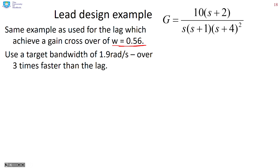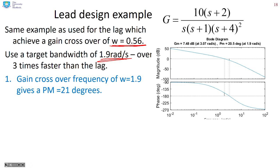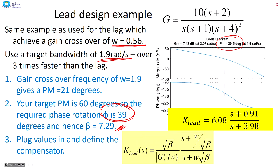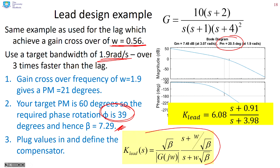Let's look at the same example used with the lag. With the lag, the crossover frequency was 0.56 — with a lead we can go faster, so we aim for 1.9 radians per second. At a gain crossover frequency of 1.9, scaling G gives a phase margin of only 21 degrees. To achieve a phase margin of 60 degrees, we need a phase rotation of 39 degrees, which means beta has to be 7.29. Plugging those values into the formula gives the lead compensator.